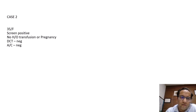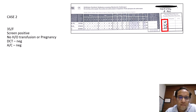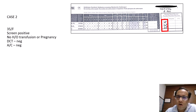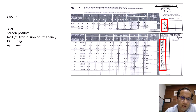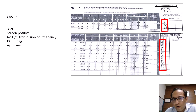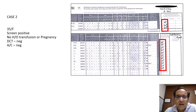Another case: a 35-year-old female with a positive screen, no history of transfusion or pregnancy. DCT is negative, auto control is again negative. We observed pan-reactivity and thought it could be due to some high-frequency antigen. Since the auto control and DCT were negative, we did not think of AIHA. We did the extended panel and found that all cells were positive with a reaction strength of 2+, confirming weak pan-reactivity.